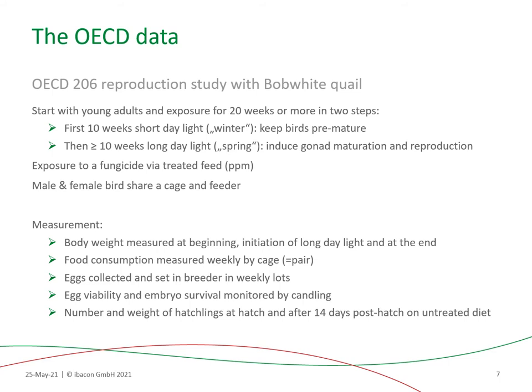Different measurements were performed along the experiment. In particular, body weight was measured at the beginning, initiation of long day, and at the end of the experiment. Food consumption was measured weekly per cage, so for each pair. The eggs were collected daily and set in a breeder in a weekly lot. Egg viability and embryo survival was monitored by candling. The number of hatchlings and their weight at hatch and after 14 days on an integrated diet was also monitored.